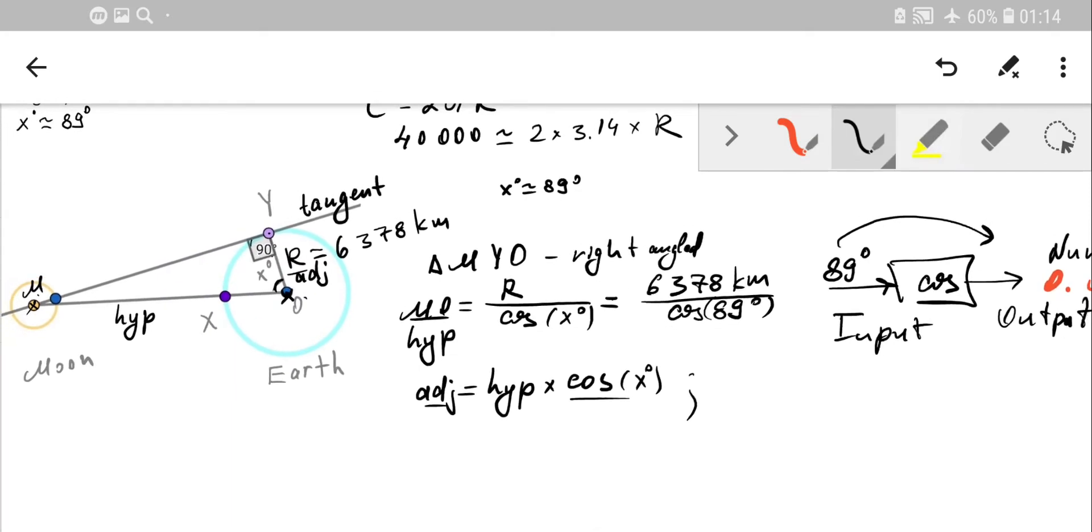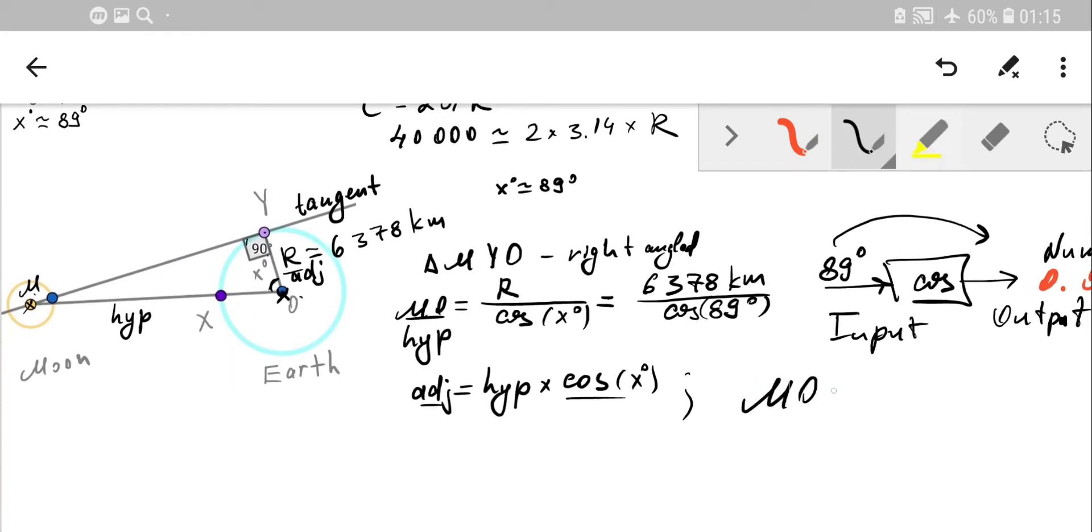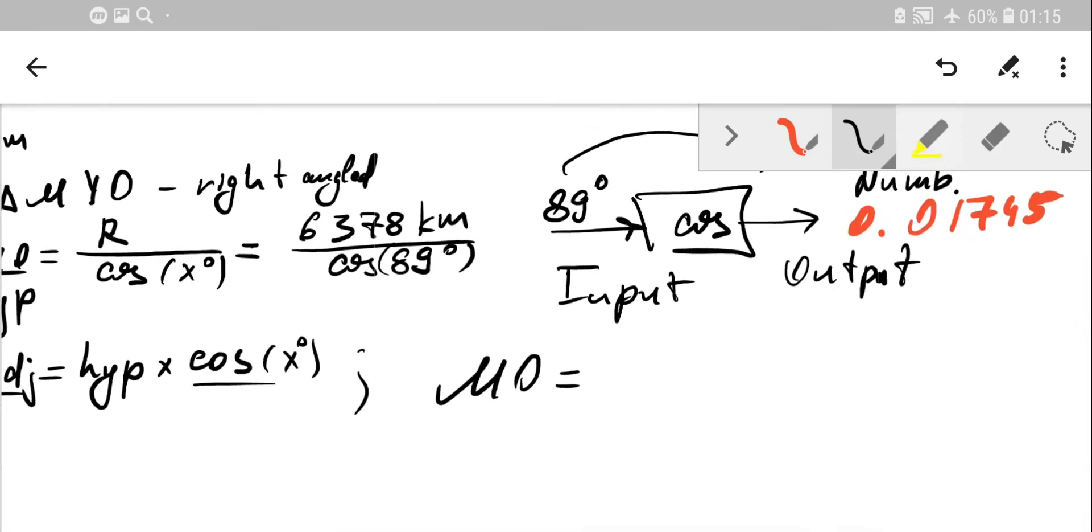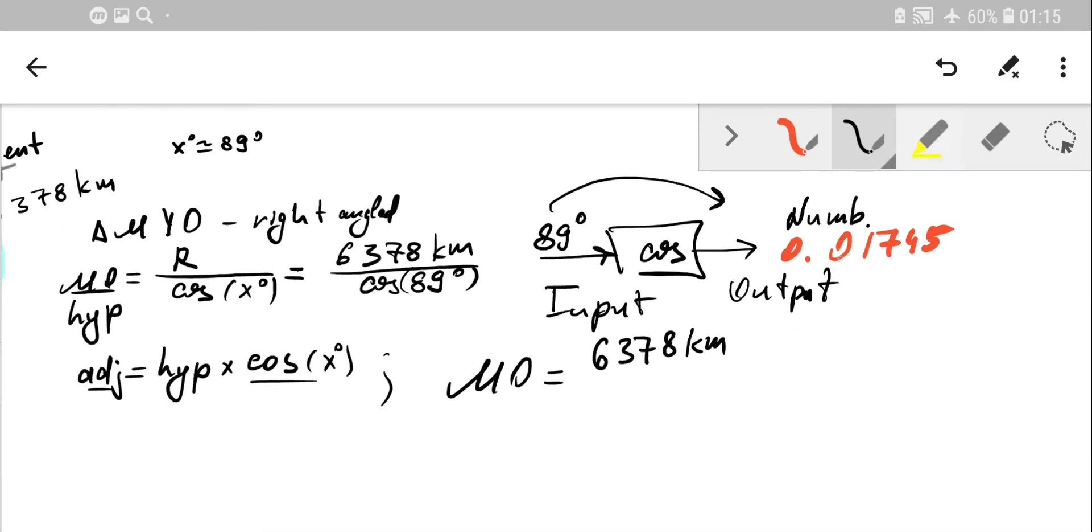To find the distance to the moon, MO is 6378 kilometers divided by 0.01745. Let's calculate: 6378 divided by this value gives us 365,451, so around 365,000 kilometers.